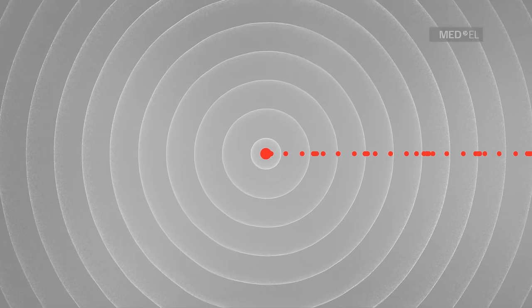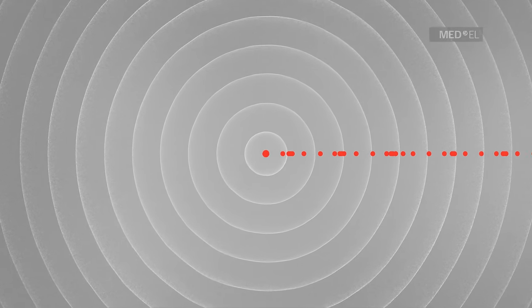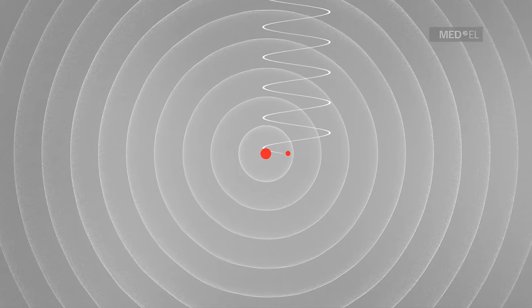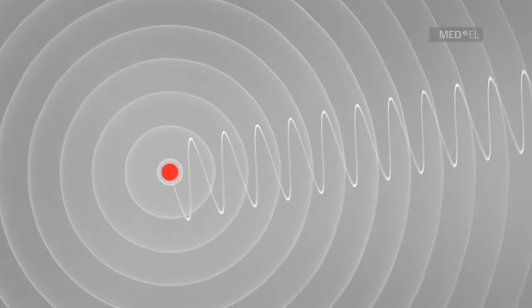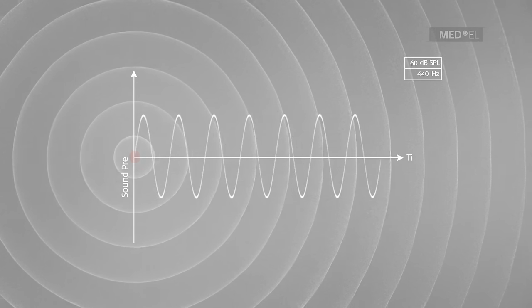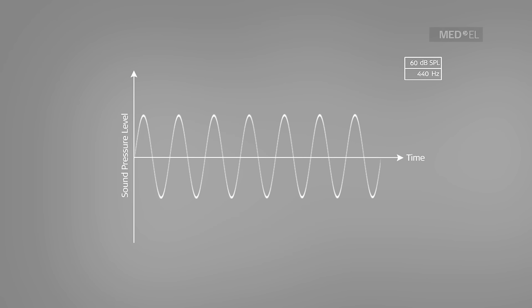Such pressure causes these molecules to move back and forth from their equilibrium position. The movement of molecules determines the frequency and amplitude of a sound. These properties lend a specific sound its unique pitch and loudness.